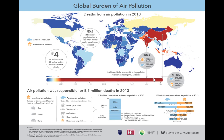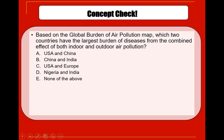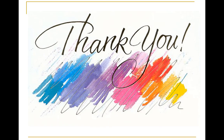Let's do a quick concept check: based on the global burden of air pollution map, which two countries have the largest burden of diseases from the combined effect of both indoor and outdoor air pollution? The answer is China and India.